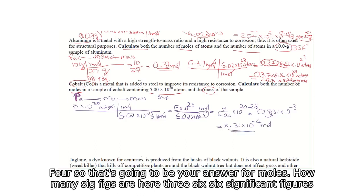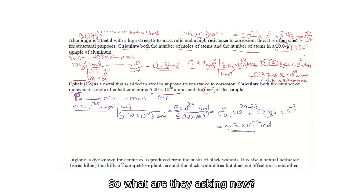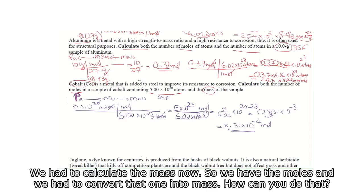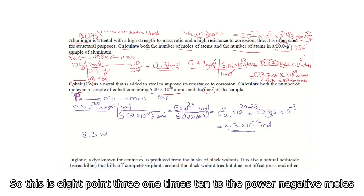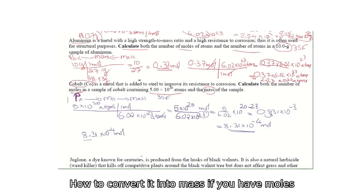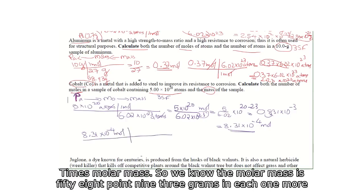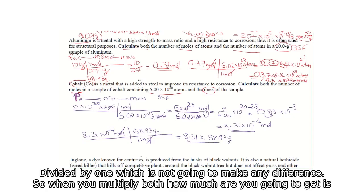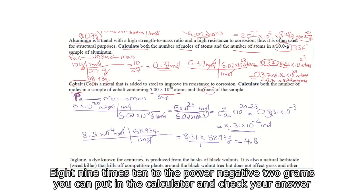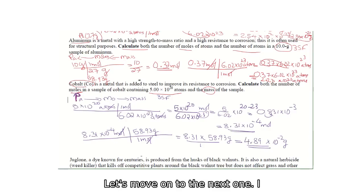Three significant figures, matching the question. Now to calculate the mass from moles, we multiply by molar mass: 8.31×10⁻⁴ moles × 58.93 grams per mole. Moles cancel, giving 8.31 × 58.93 ÷ 1 = 4.89×10⁻² grams. You can put that in the calculator and check your answer.